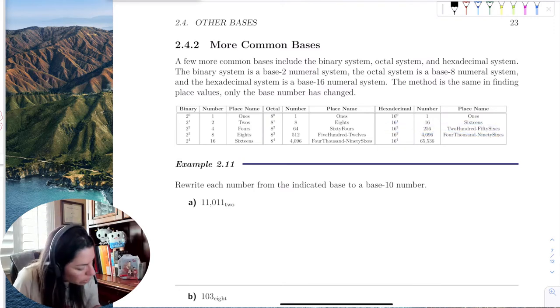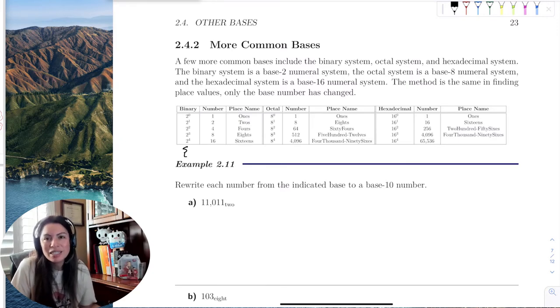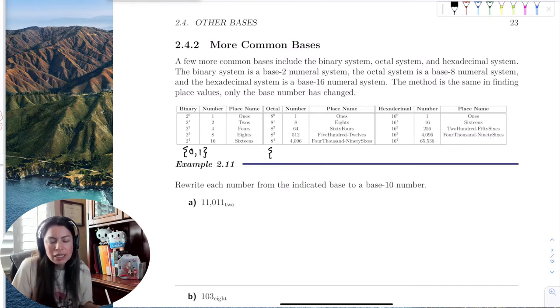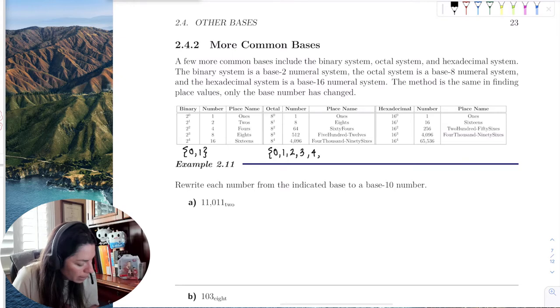Binary, which is base 2, has the digits 0 and 1 - one less than the base. Base 8 has 8 digits in its number set, 0 through 1 less than 8 which is 7. So 0, 1, 2, 3, all the way to 7.